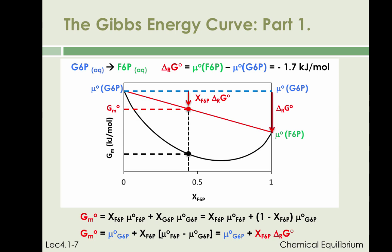If the mole fraction of fructose 6-phosphate decreases to zero, then the arrow vanishes and the standard molar Gibbs energy of the mixture is mu standard G6P. If the mole fraction of fructose 6-phosphate increases to one, then the small red arrow becomes the large red arrow and the standard molar Gibbs energy of the mixture is mu standard F6P. The red dot moves along the red line between pure G6P and pure F6P, reflecting the change in Gibbs energy of the pure components as more or less F6P and G6P are present in the mixture.